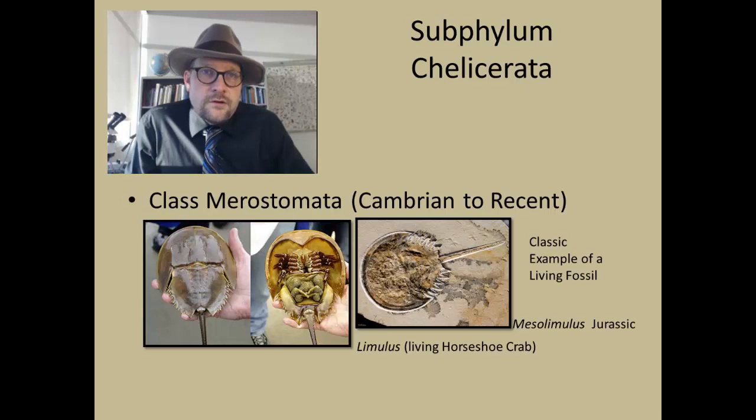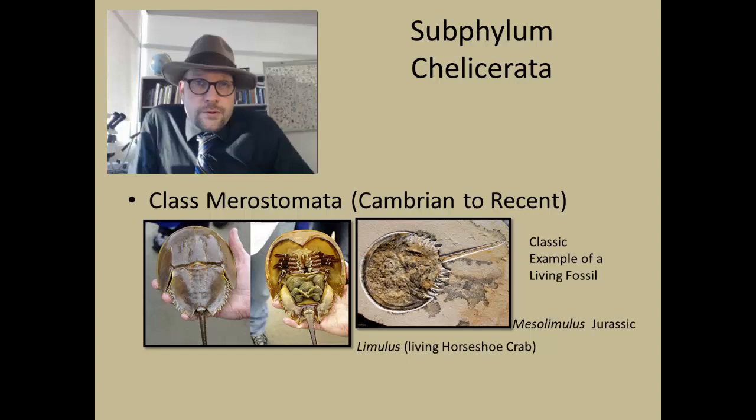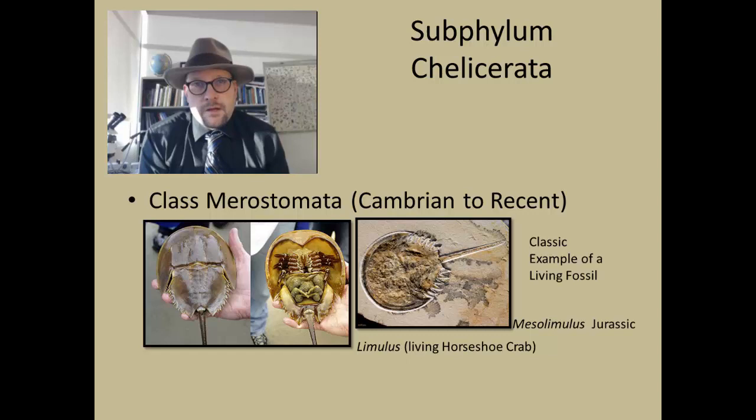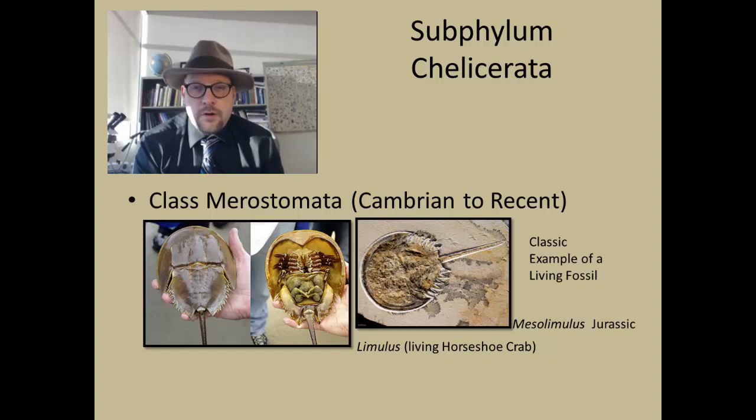The Chelicerata include the Merostomata, which includes the modern-day horseshoe crabs, Limulus. Fossils that closely resemble Limulus extend into the fossil record going all the way back to the Mesozoic. The genus Mesolimulus from the Jurassic of Germany closely resembles, almost looks exactly like, a modern-day horseshoe crab. This makes the genus Limulus a good example of a living fossil, where for very long periods of geological time, the morphology of a species does not change significantly.